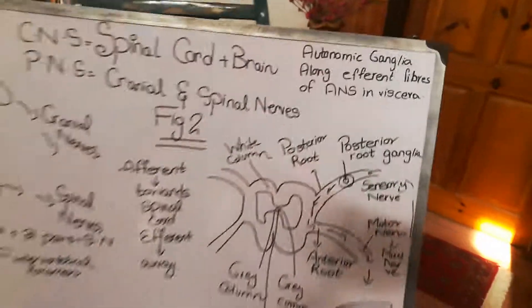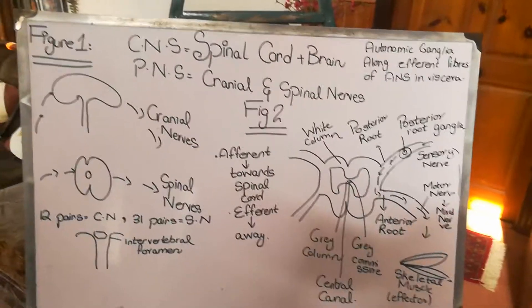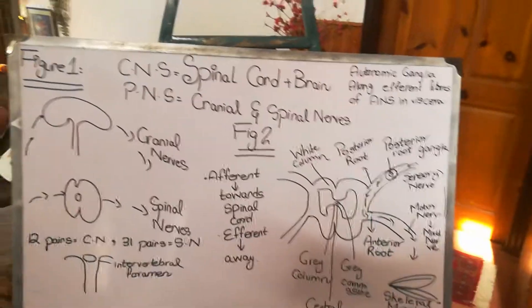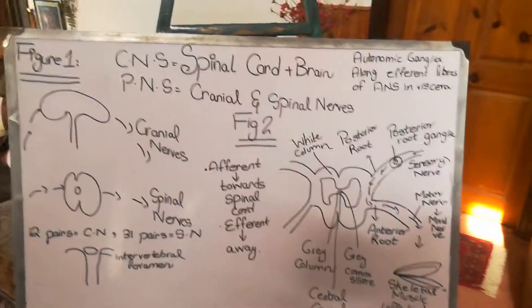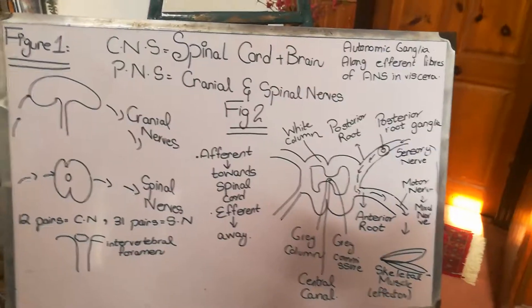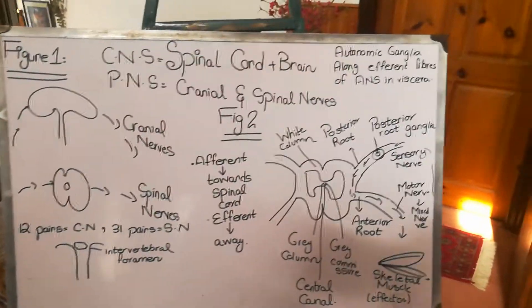That was all for the central nervous system and peripheral nervous system. Hope it helped you understand. If you have any questions, leave them in the comment box. Thank you.